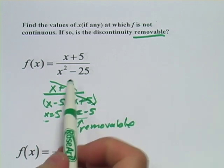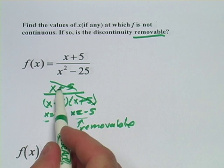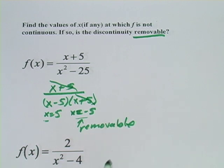The reason I say to be careful with the signs is that you might be tempted to say that this is a positive 5 because the factor is x plus 5. But remember you have to solve that for the value x equals negative 5.